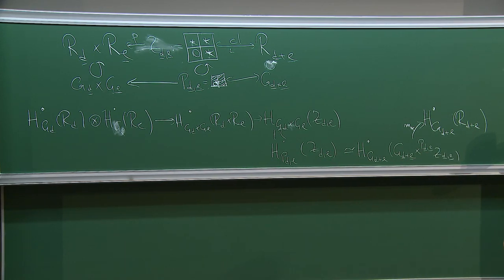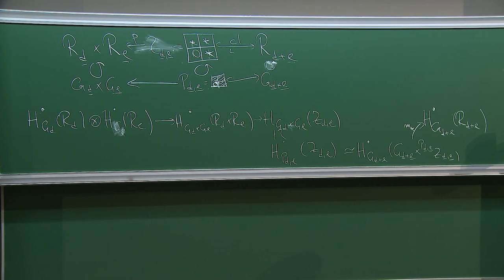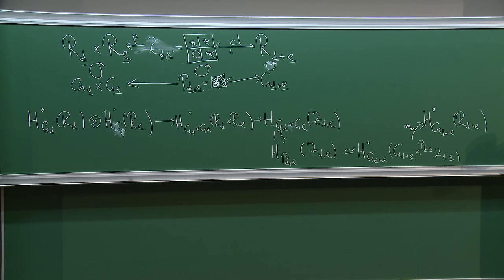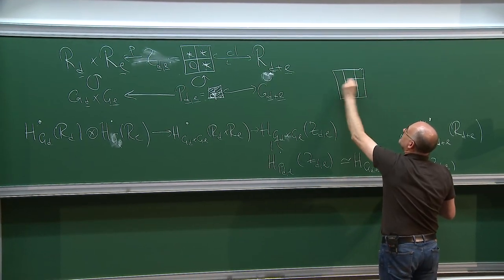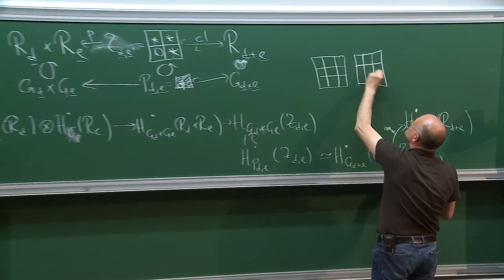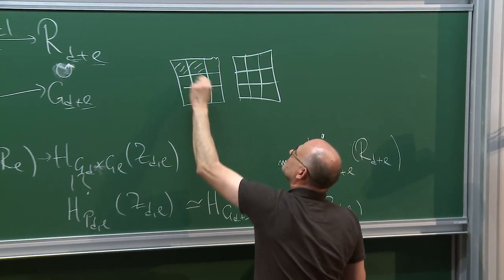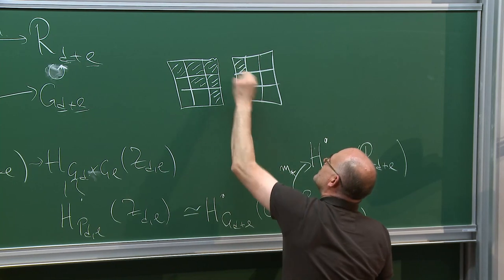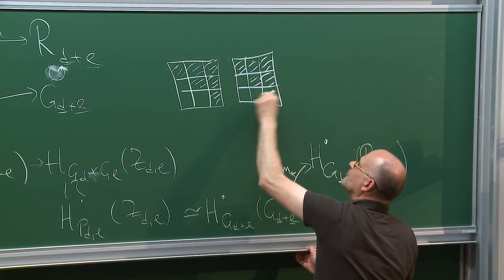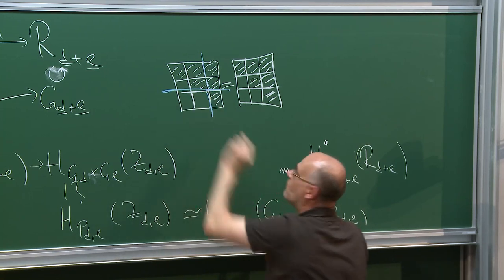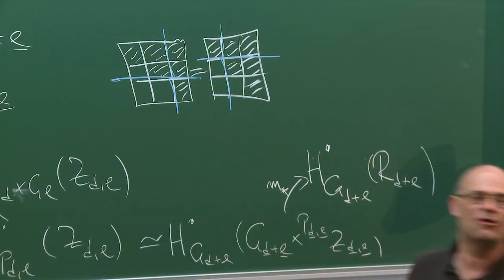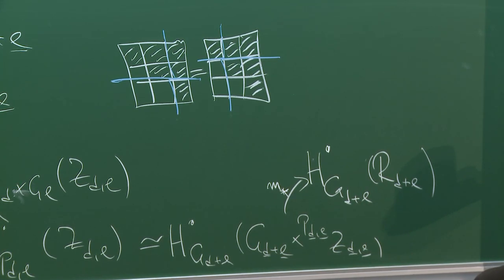Every single step is a very natural operation in equivariant cohomology — no mysteries. Then you have to verify associativity, which requires writing down huge diagrams, but nothing really spectacular happens. Associativity mainly comes from the fact that you can view the space of three-by-three block matrices in two different ways: a two-by-two block extended by a one-by-one block, or a one-by-one block extended by a two-by-two block.